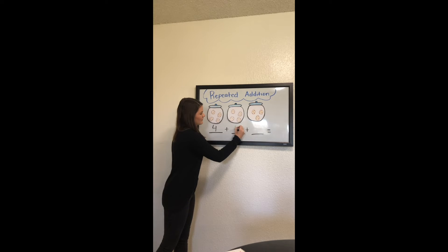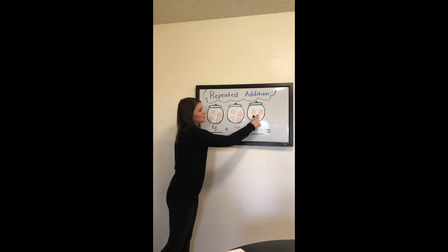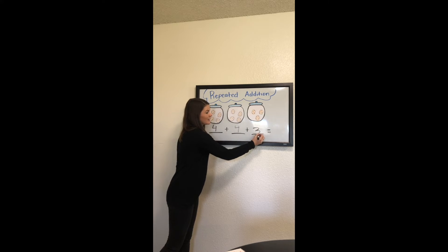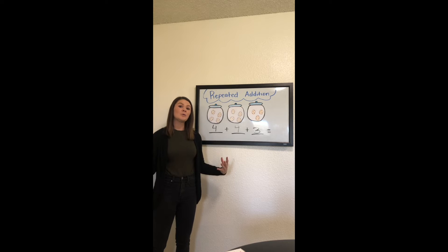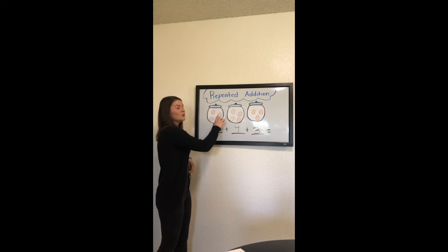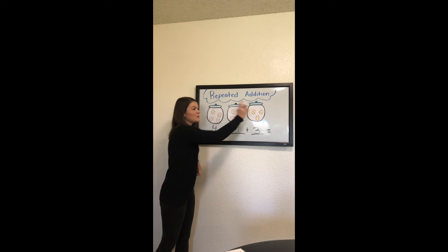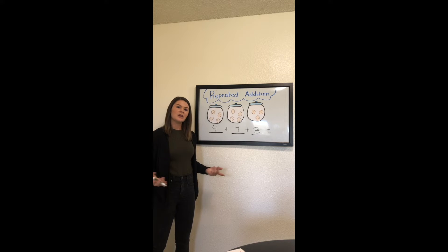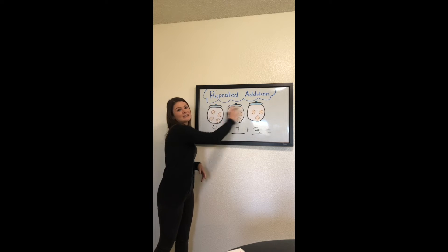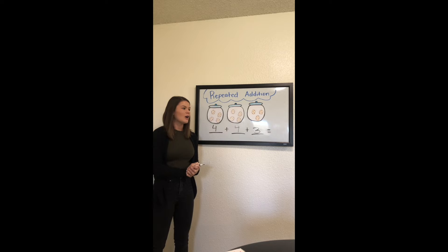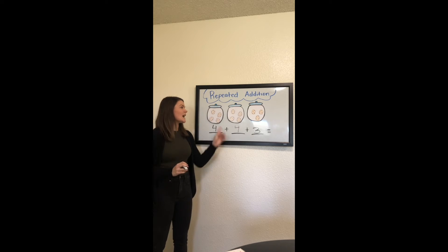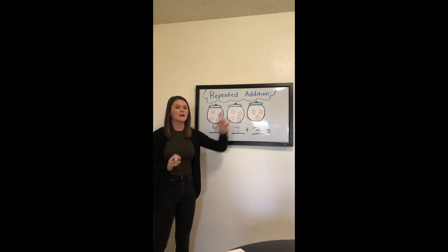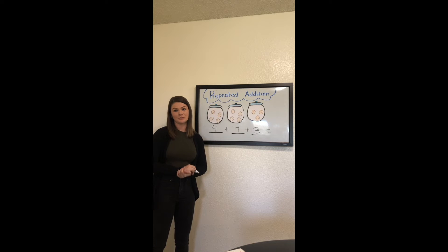We cannot add these together because we have four, four, and three. Remember our keyword for today is equal — every group has to be equal. And if they're not equal, we can't use repeated addition to solve it. So four plus four plus three, we can't do it. We need four plus four plus four in order to do repeated addition.